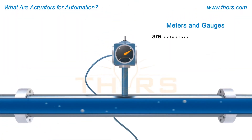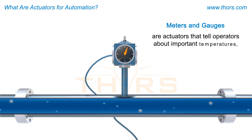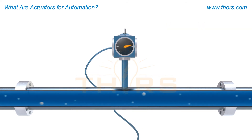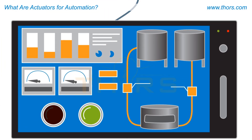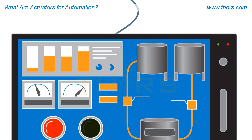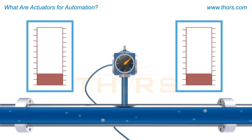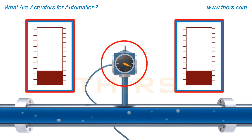Meters and gauges are actuators that tell operators about important temperatures, pressures, or other values that need to be monitored. Typically, meters and gauges function based on displaying a reading in an analog or digital format. For example, the amount of liquid that is traveling through a pipe within an automation system may show a dial that moves when the flow rate increases.